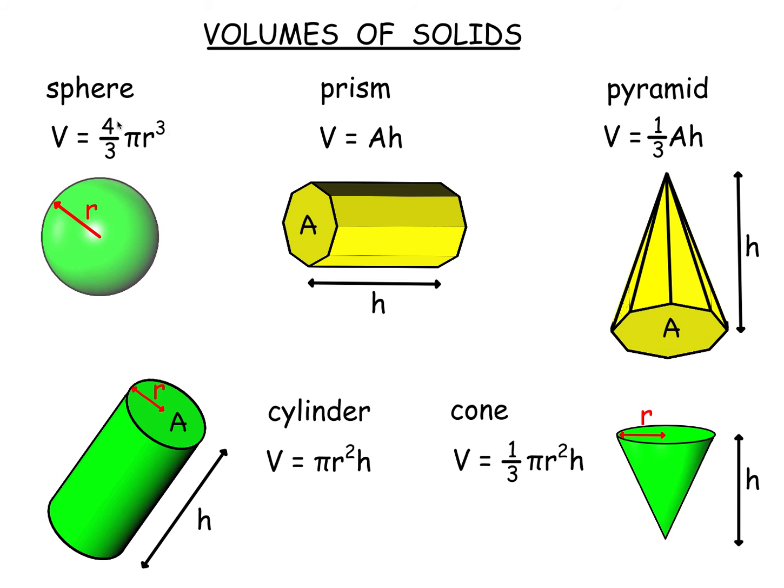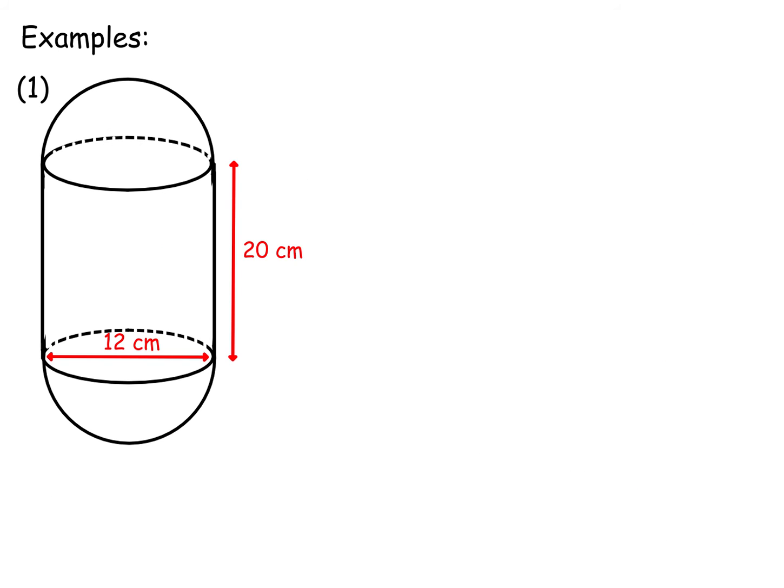So we're going to have questions involving the sphere together with questions involving the prism and the pyramid, including cylinder and cone. So here's an example. There's a cylinder here. Cylinder's diameter 12, height 20.